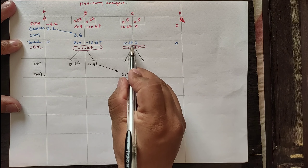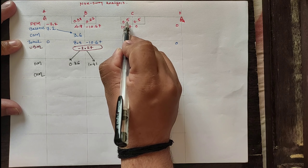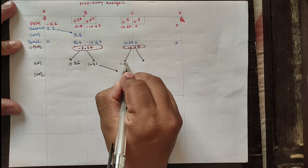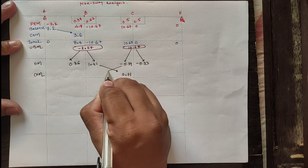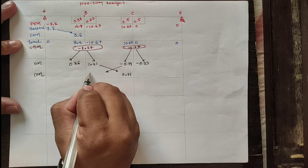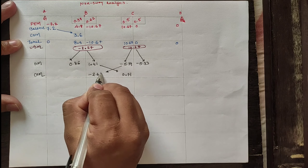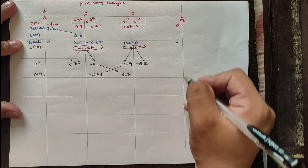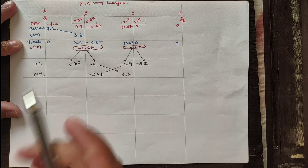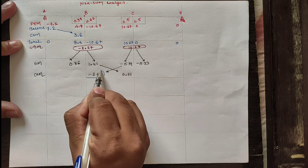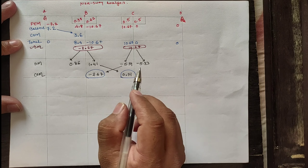Now going for joint C: 10.67 is positive, hence minus 10.67 × 0.5 = minus 5.34, and half the value for the carryover moment is one-half of 5.34 = 2.67. For the far end roller, we need not go for the carryover moment. For further steps, we have to distribute this carryover moment until our distribution moment is near to 0.1.